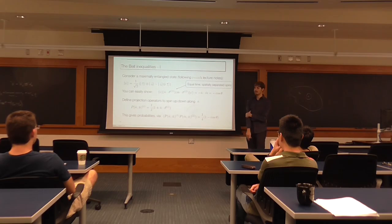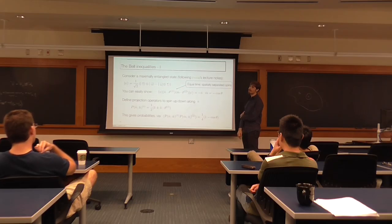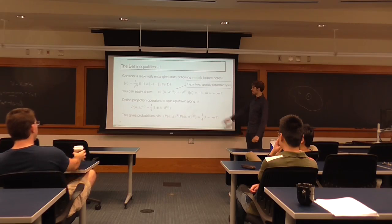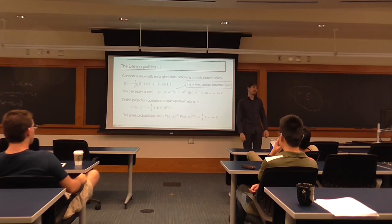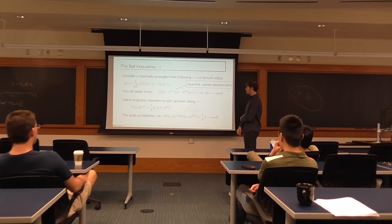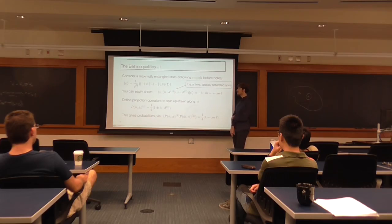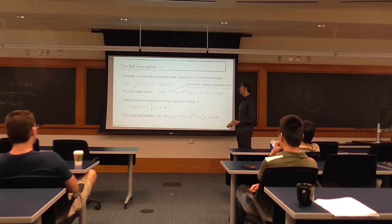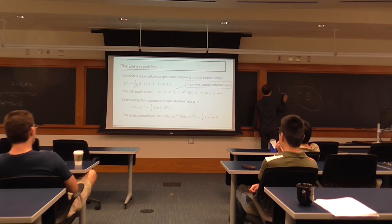Consider a maximally entangled state built out of two spins—1 over root 2 times (spin-up spin-down). Maximally entangled means that if you trace over one spin, the reduced density matrix for the remaining spin is proportional to the identity. Given this state, you can show that the expectation value of sigma_1 dot n-hat times sigma_2 dot m-hat equals negative n-hat dot m-hat, or minus cosine theta if the angle between axes is theta. That allows you to compute probabilities: the probability of finding the same spin along axes is 1/4 times (1 minus cos theta), and opposite spins along the same axis gives 1/4 times (1 plus cos theta), which sum to one as required.